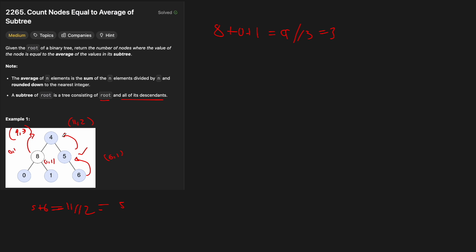At node 4, the total value is 4 plus 11 plus 9 = 24. The total node count is 1 plus 2 plus 3 = 6. 24 integer divided by 6 is 4, which equals our root node's value, so we count it. So we counted nodes 4, 5, 6, 1, and 0, giving us an answer of 5.